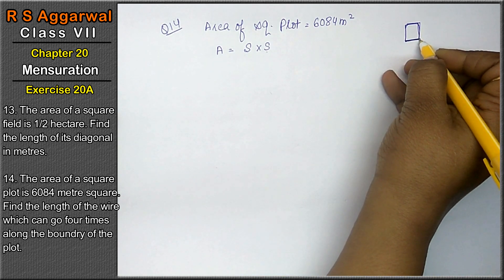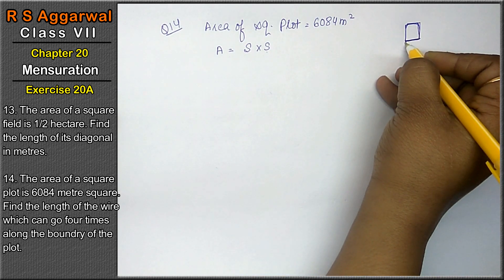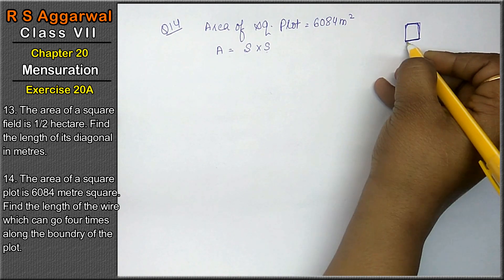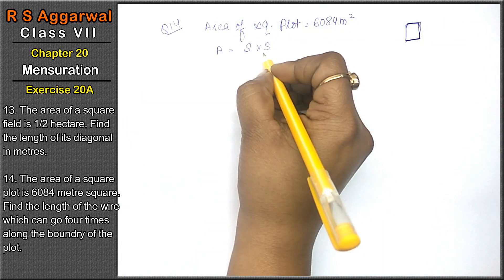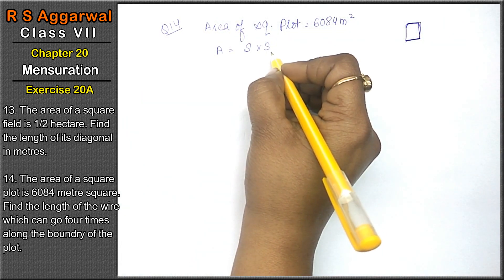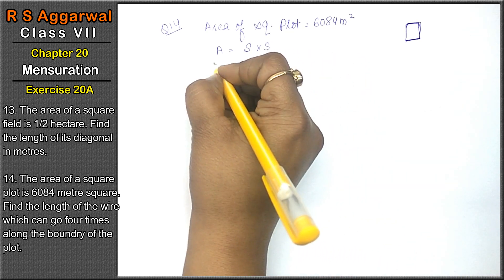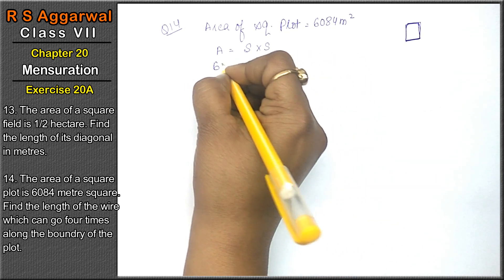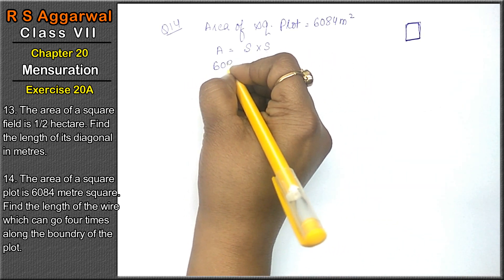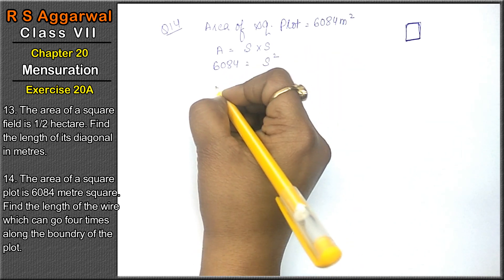जब भी boundary से related कुछ देखना होता है, that means we have to find the perimeter. Perimeter के लिए 4S चाहिएगी, तो side चाहिए. तो area = 6084 = side².